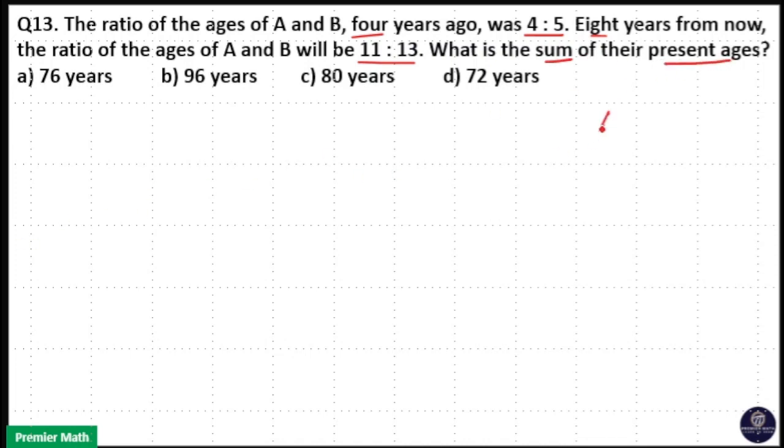So four years ago, the ratio of ages of A and B was 4 is to 5. That means four years ago their sum was divisible by 4 plus 5, which is 9. Here the options are the sum of the present ages of A and B.